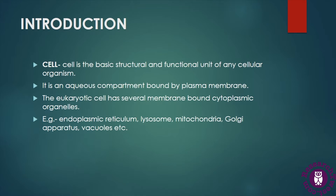The cell is defined as the basic structural and functional unit of any cellular organism. All cellular organisms, except viruses, are made up of cells and they can be unicellular and multicellular. The cell is composed of different types of cellular organelles, an aqueous compartment called the cytoplasm, and it is bound by a plasma membrane which is a semi-permeable membrane.